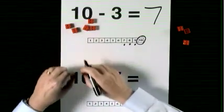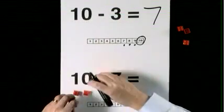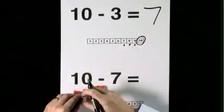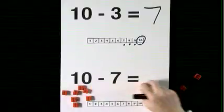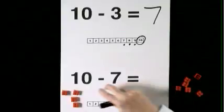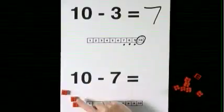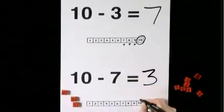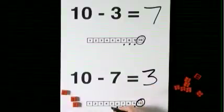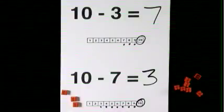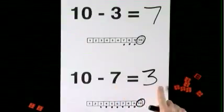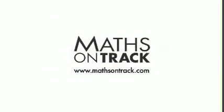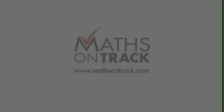Ten take seven. Ten take one, take two, take three, take four, take five, take six, take seven. Leaves one, two, three. Ten take one, two, three, four, five, six, seven makes three. Ten take three makes seven. Ten take seven makes three.